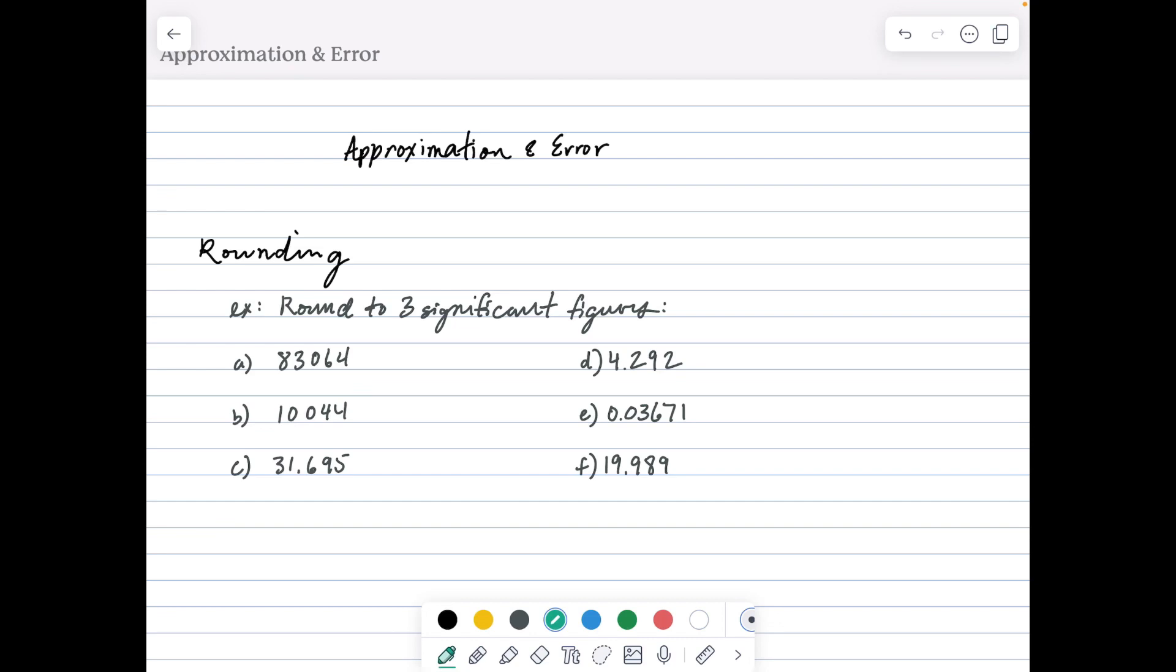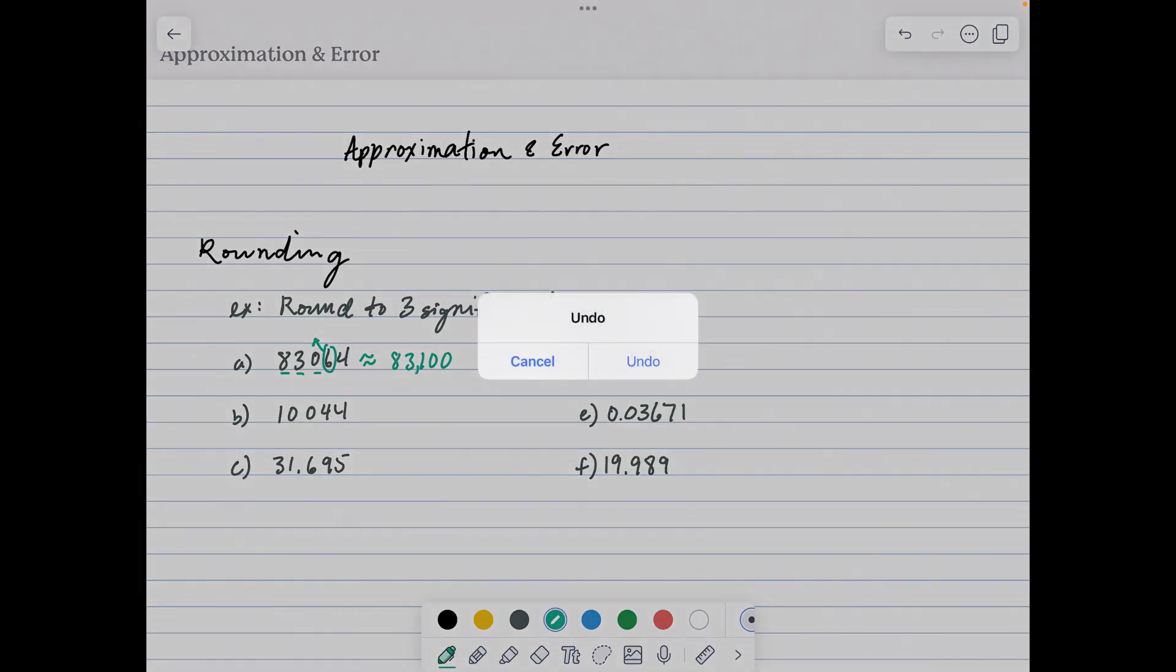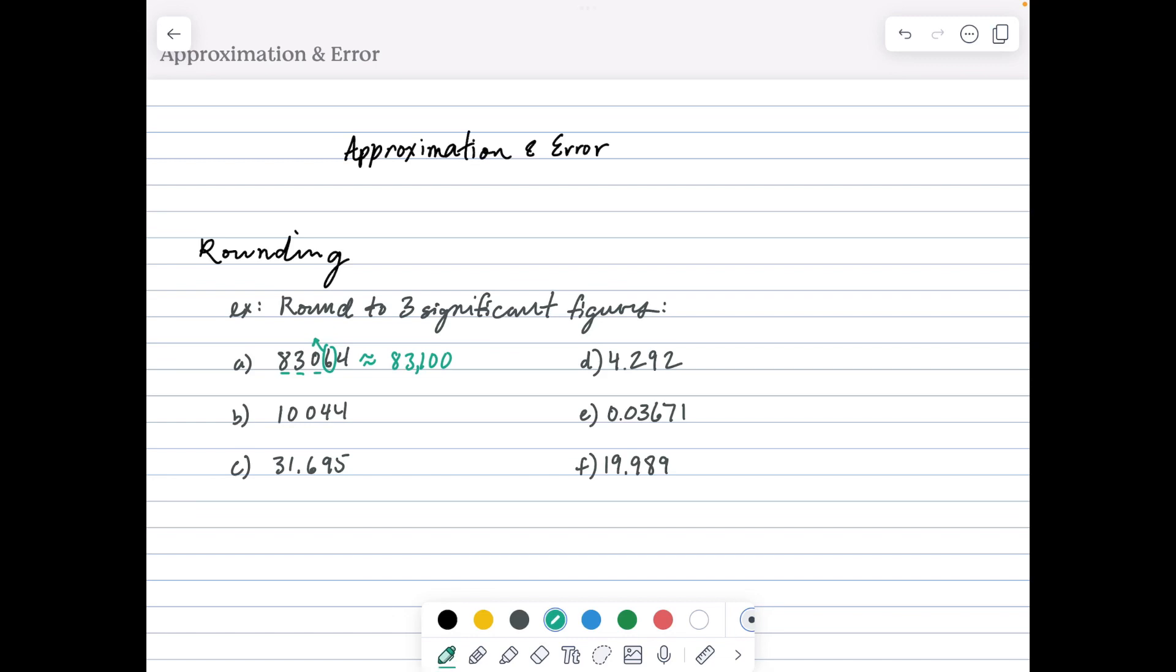For example A, 83,064 rounded to three significant figures: starting with the most valuable digit of 8 and then two more, those are three significant figures. We look at the 6 next to the zero - since it's 5 or above, we round that zero up to 1. This is approximately 83,100, with zeros replacing everything beyond.